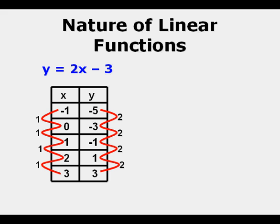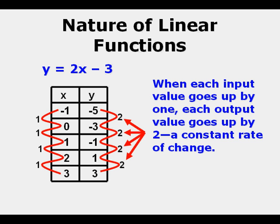And here we see it in table form, numeric representation. We see that with each input value going up by 1, each output value goes up by 2. So that's what we call a constant rate of change.